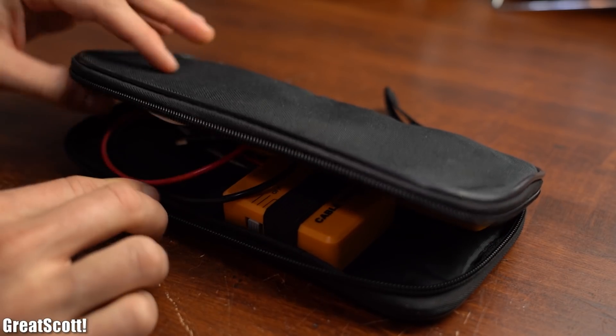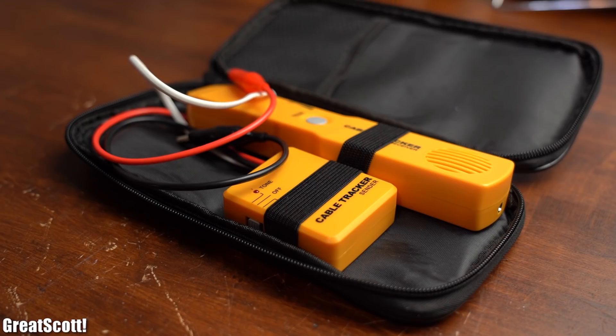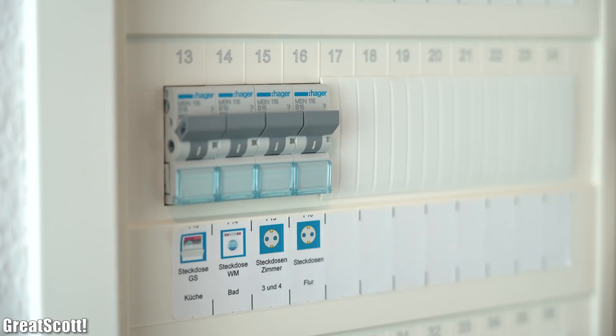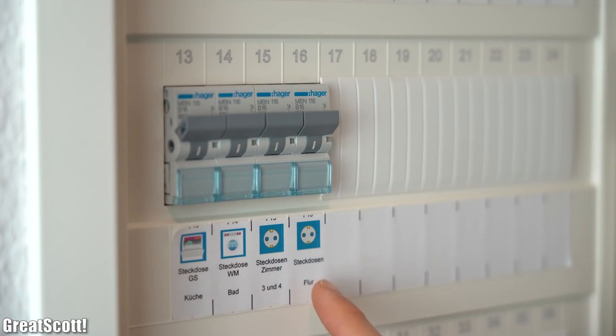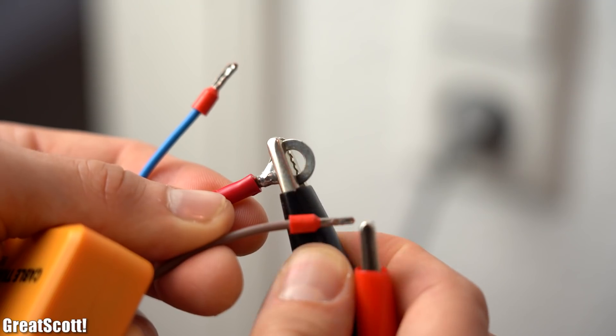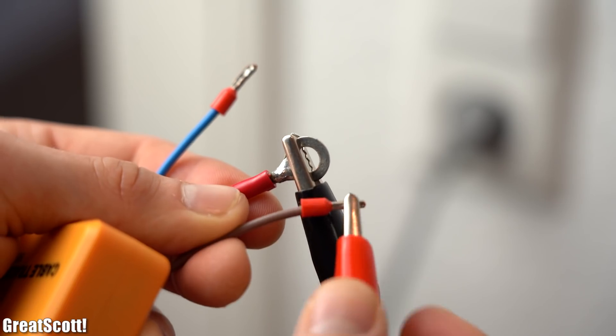A solution to this problem could be such a cable tracker, which I got from eBay for pretty cheap. To use it, I firstly have to turn off the mains power with the help of the matching fuse. Then I can push a plug into the outlet whose L and PE wire I hook up to the cable tracker.